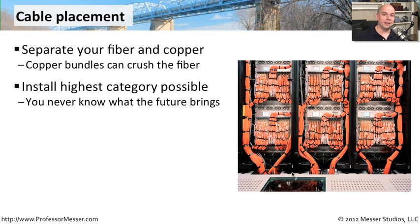During the installation process of your fiber plant, you also want to think about the category of cable you're using. Even if you only need category five, you might opt to put category six or category 6A in, because you know later on you might want to use some faster speeds. It's very difficult to pull out all of the cable afterwards, so you might as well put in the best that you can at the time.